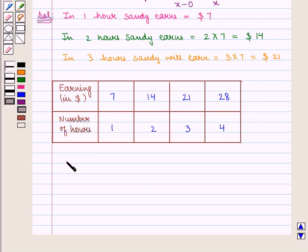And we can see, each ratio of earning to number of hours is equal to 7/1, which is equal to 14/2, which is equal to 21/3, and is equal to 28/4.